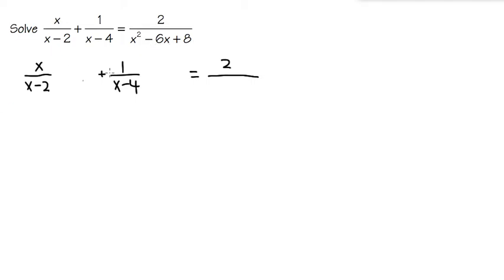We can actually factor this out. You see that this is a trinomial and the coefficient in front of x squared is just 1, so we can open x and x. We ask ourselves: what times what will give us positive 8, and together they add up to negative 6? The answer is minus 2 and minus 4, because negative 2 times negative 4 gives us positive 8, and negative 2 minus 4 gives us negative 6. So the factored version of this denominator is x minus 2 times x minus 4.